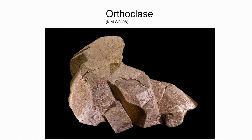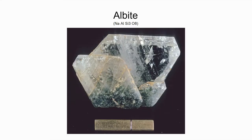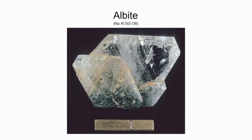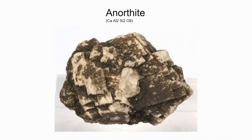Moving on, we have albite. In orthoclase the X was replaced with a potassium ion, but in albite the X is replaced with a sodium ion. That's what makes albite the sodium end member, whereas orthoclase is the potassium end member.